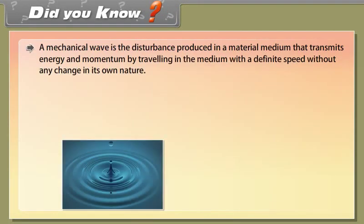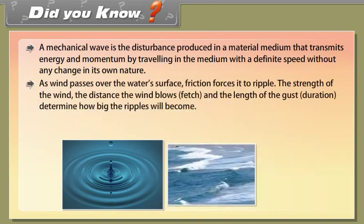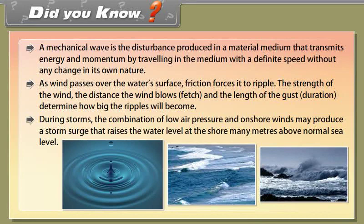Did you know? A mechanical wave is the disturbance produced in a material medium that transmits energy and momentum by traveling through the medium at a definite speed without any change in its own nature. As wind passes over the water's surface, friction causes ripples — the strength of the wind, the fetch (distance the wind blows), and the duration determine how big the ripples become. During storms, the combination of low air pressure and onshore winds may produce a storm surge that raises the water level many meters above normal sea level.